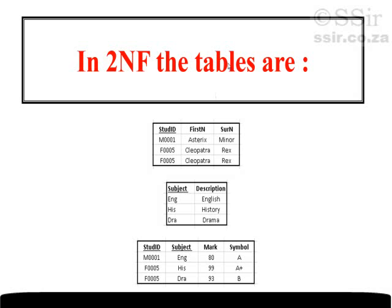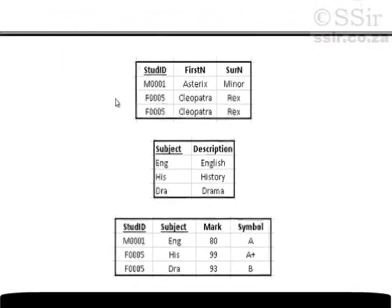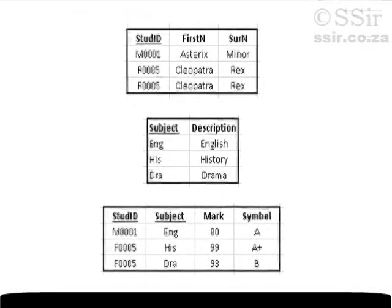In second normal form, this database has now been written in second normal form. We have more tables than we started with — we started with one table and now we have three: the student table, the subjects table, and the marks table.